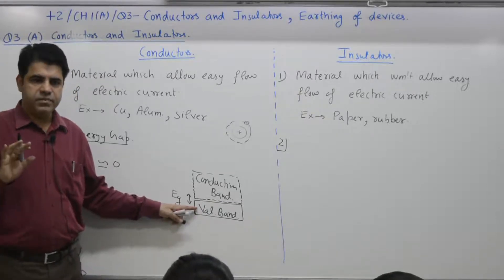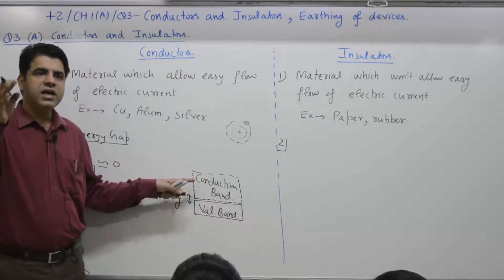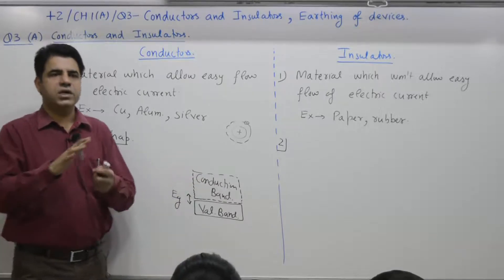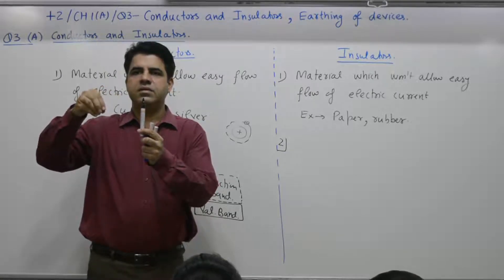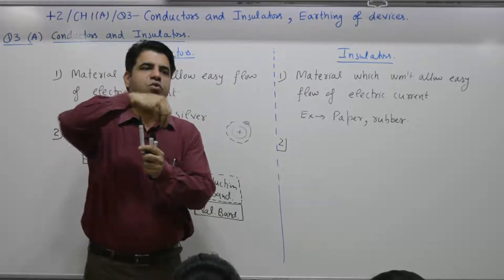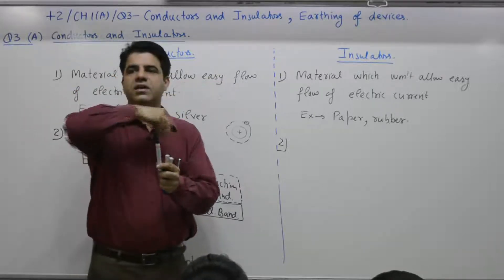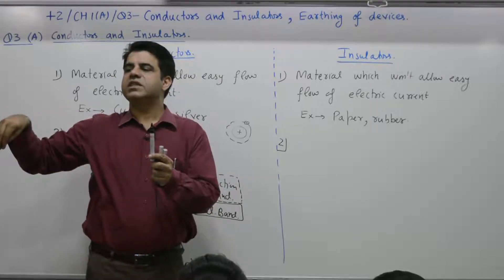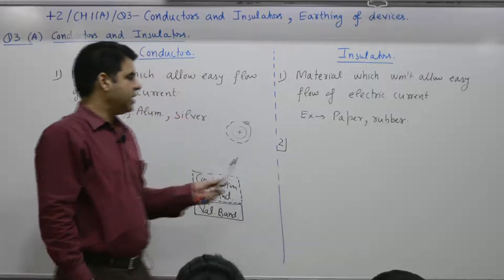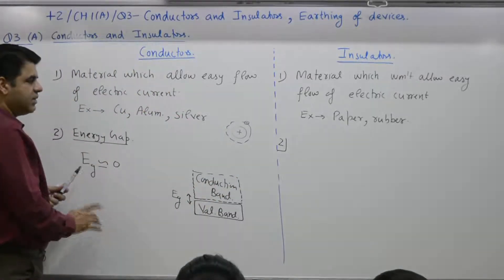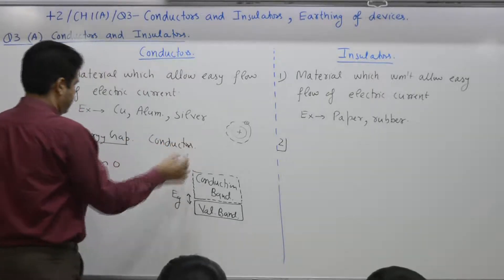You supply some energy, it becomes free and can move anywhere - it's in the conduction band. The equivalent is a dog chained to a pole. The dog is confined and can move only up to a certain distance. If you break this chain, the dog can move anywhere. Then we say it's in conduction band, not confined. Similarly for materials. This energy gap is for conductors - almost zero.